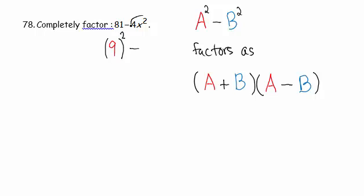Now let's look at 4x squared, the quantity that follows a minus sign. What quantity squared gives us 4x squared? The answer is 2x.